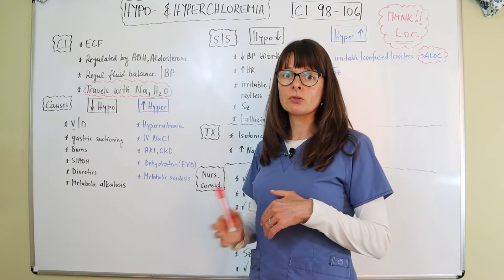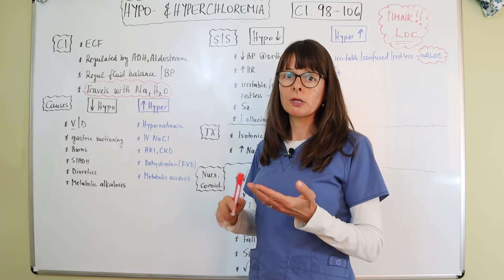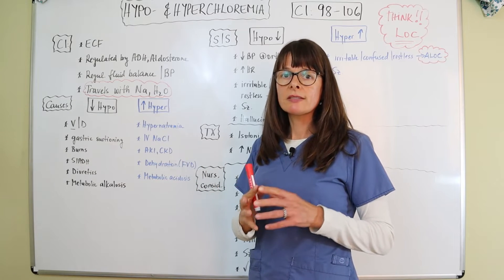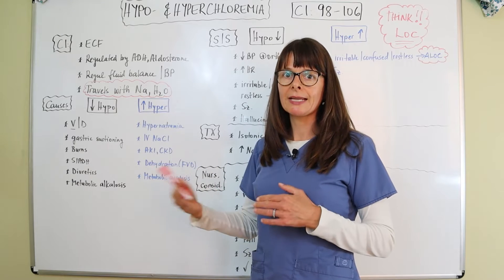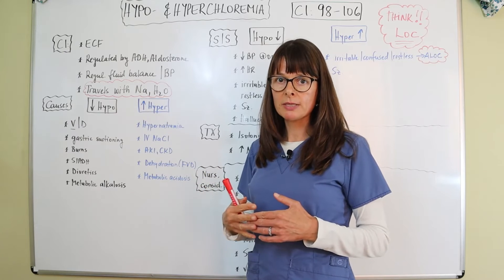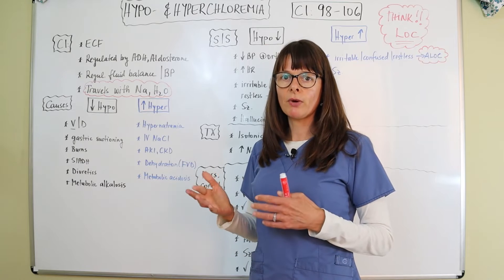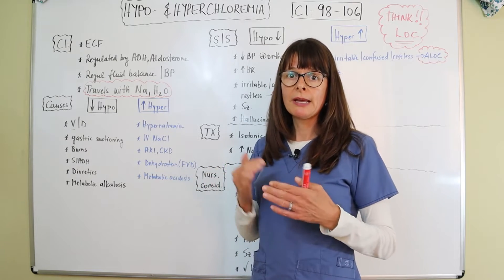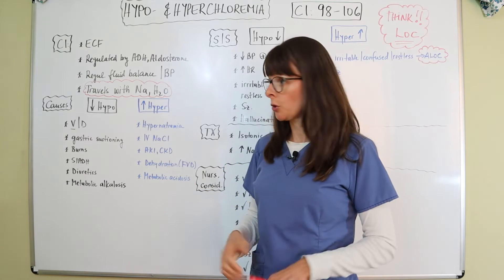Chloride travels with sodium and water. Usually if sodium levels are low, chloride levels will be low. If sodium is high, chloride will be high. The chances that you see hypo or hyperchloremia are less likely than seeing hypo or hypernatremia, but it is very possible. The two usually move in the same direction, and because they attract water, they always travel with it — giving them a big influence on fluid balance and blood pressure control.